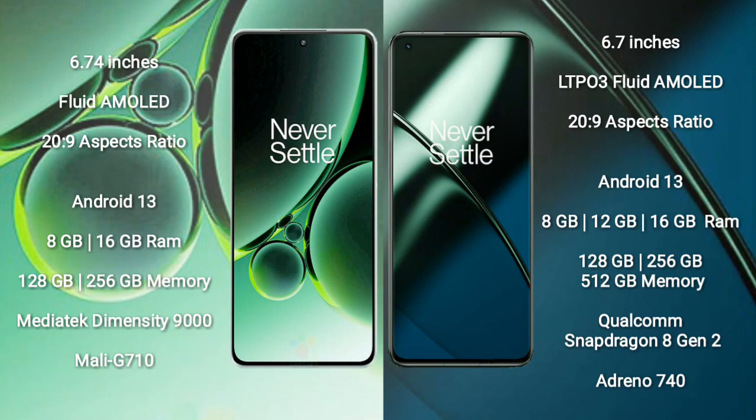The OnePlus Nord 3 comes with 8GB or 16GB of RAM and 128GB or 256GB of internal storage. It is powered by the MediaTek Dimensity 9000 processor with a Mali-G710 GPU.